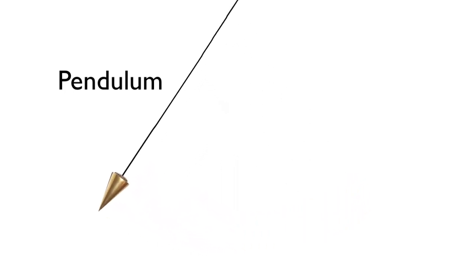How long it takes a pendulum to swing back and forth depends on only two things: the length of the string and the acceleration due to gravity.